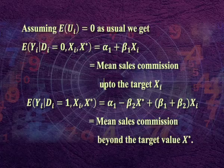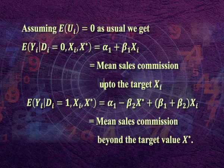Assuming E(u_i) = 0, we get: E(y_i | d_i = 0, x_i ≤ x*) = alpha_1 + beta_1*x_i, which is mean sales commission below the target value. E(y_i | d_i = 1, x_i > x*) = (alpha_1 - beta_2*x*) + (beta_1 + beta_2)*x_i, which is mean sales commission beyond the target value x*. Beta_1 is the slope of the line in segment 1, and beta_1 + beta_2 is the slope in segment 2. Thus, instead of two separate segment-wise regressions, we can have only one regression. This illustrates what is known as a spline function, and further extension leads to piecewise polynomial of order k.